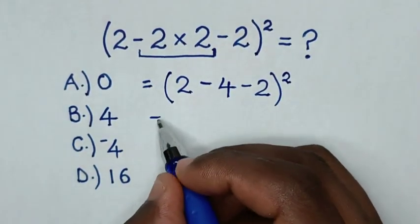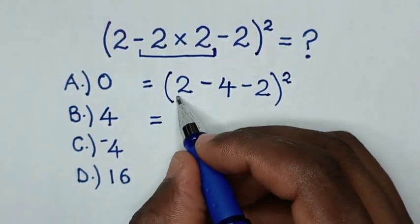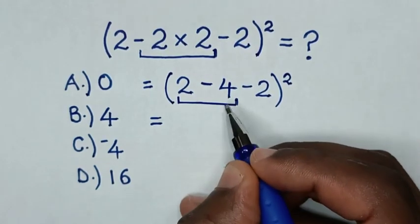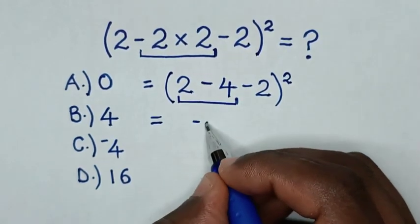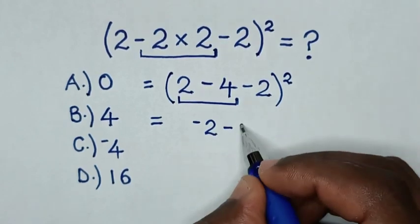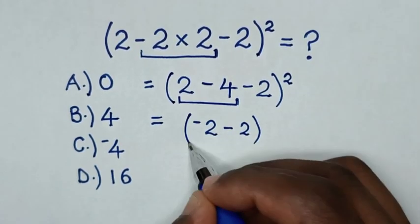Then in the next step, it will be equal to, we'll start to deal with this first operation inside the bracket, 2 minus 4 which is negative 2, then minus 2, bracket, square.